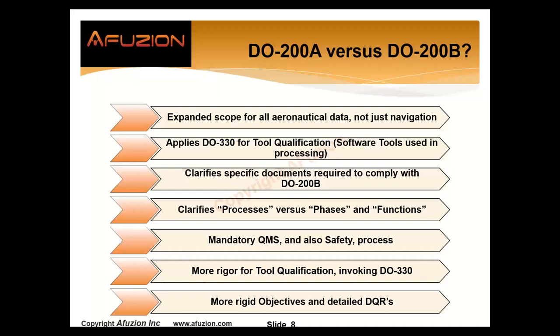Some differences with the previous version. If you're being audited by EASA, FAA, or a military entity — and Fusion works with 15 of those — key on these differences between 200A and 200B, because this is what you'll be audited on. There's an expanded scope for aeronautical data — it's not just navigation data. It also applies DO-330. Remember DO-178, DO-278? Airborne and ground-based data, hardware DO-254.